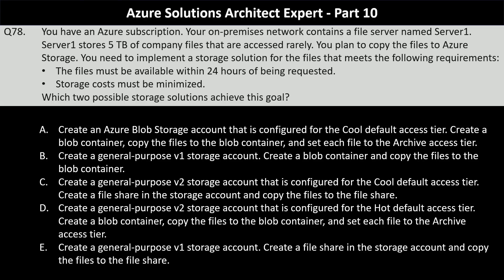Option A: Create an Azure Blob Storage account configured for the cool access tier, create a blob container, copy the files to the blob container, and set each file to the archive access tier. Option B: Create a general-purpose v1 storage account, create a blob container, and copy the files. Option C: Create a general-purpose v2 storage account configured for the cool default access tier, create a file share, and copy the files. Option D: Create a general-purpose v2 storage account configured for the hot default access tier, create a file share, and copy the files.